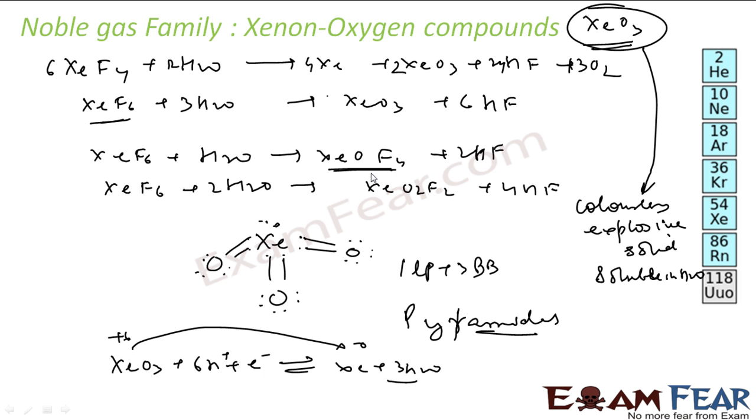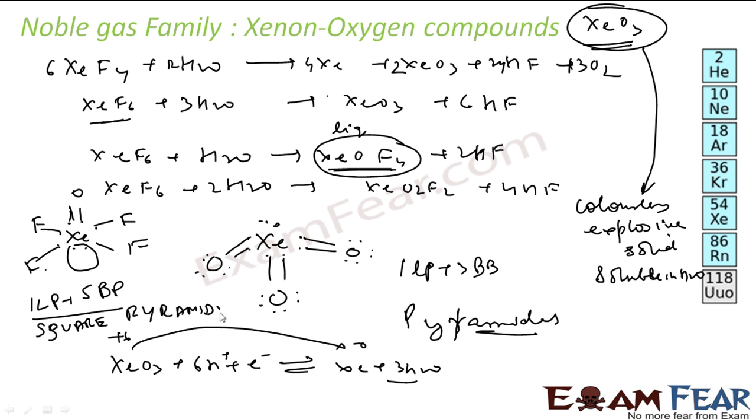So if you talk about XeOF4, this particular thing is my colorless and volatile liquid. This is a liquid actually. Talk about the shape of XeOF4. So I have Xenon: 1, 2, 3, 4, 5, 6, 7, 8 electrons. 1 Oxygen, it will take 2 bonds. 1 Fluorine, 2 Fluorine, 3 Fluorine, and 4 Fluorine. And this is my lone pair. So I have 1 lone pair plus 1, 2, 3, 4, 5 bond pairs. So with this, I have a square pyramidal structure for XeOF4.